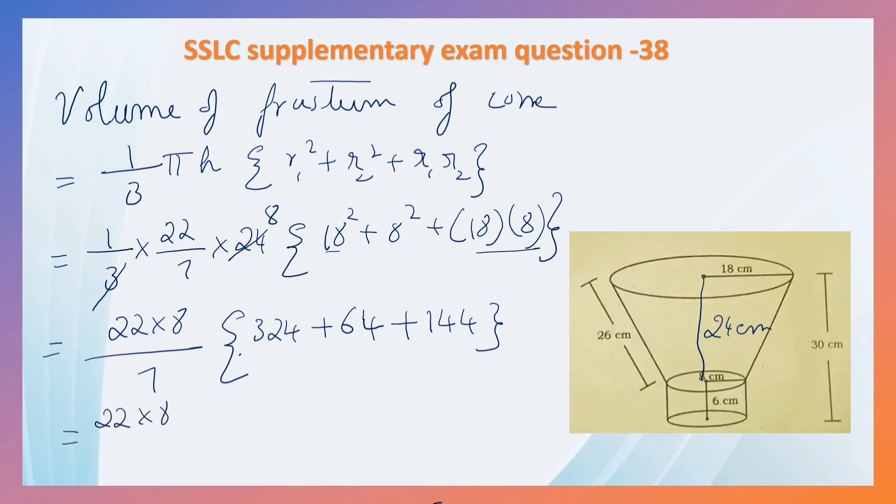22 into 8 by 7 into, 4 plus 4 plus 4 is 12 carry 1, 2 plus 1 is 3, 3 plus 6 is 9, 9 plus 4 is 13 carry 1, 3 plus 1 is 4, 4 plus 1 is 5. 22 into 8 into 76, that is equal to 13,376 centimeter cube.